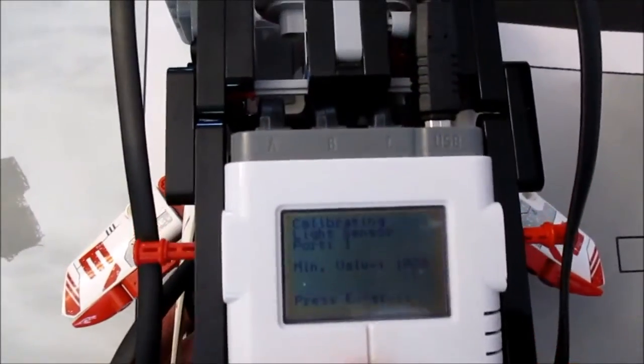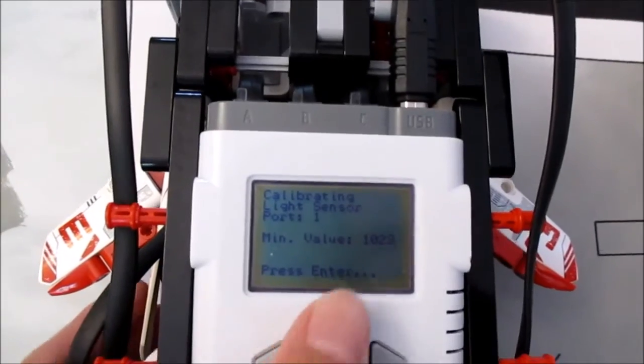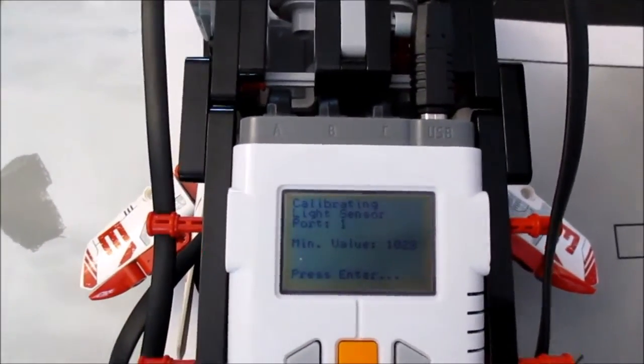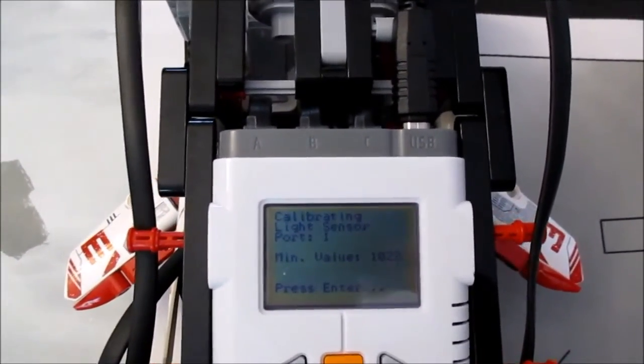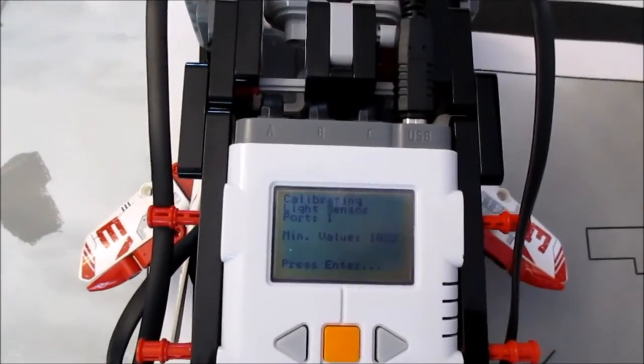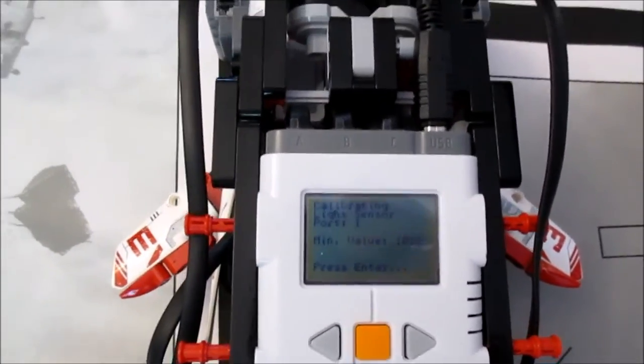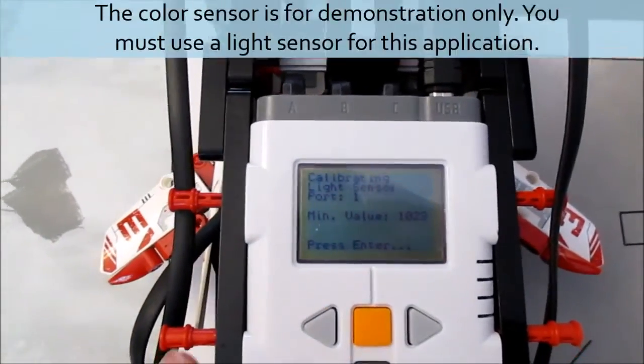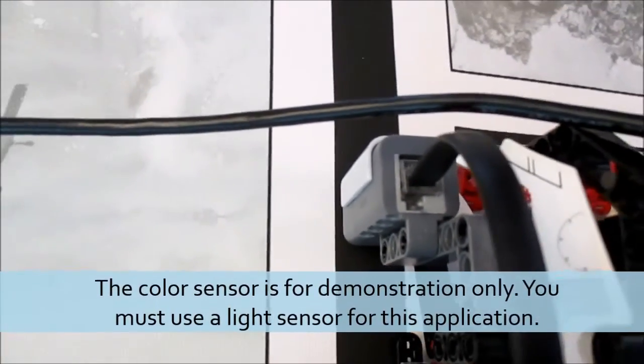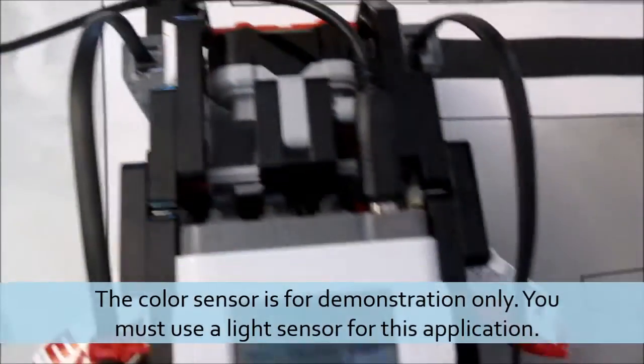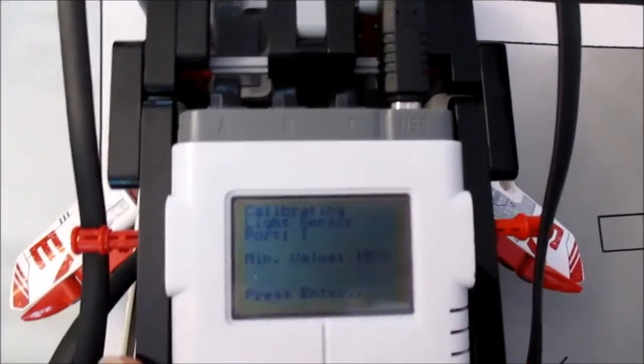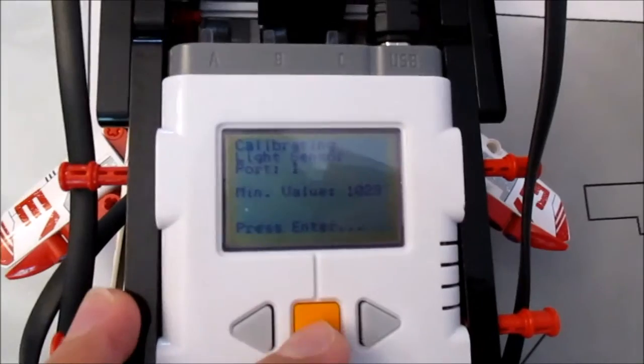As you move the robot around, the value that it's reading, displayed right there, should change. The reason why it's not changing on mine is because I don't actually have functioning light sensors right now, I'm using color sensors in their place, but it works just as well to show you how the program works. After you've situated your sensor over the black line, or whatever it is you wish to measure as your minimum, you're going to press the enter button, this orange button in the middle.